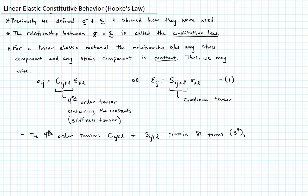But in this case, because of symmetry in i and j, in k and l, and in swapping i, j and k, l, the number of unique constants is reduced to 21, or independent constants if you like.